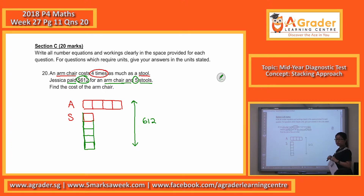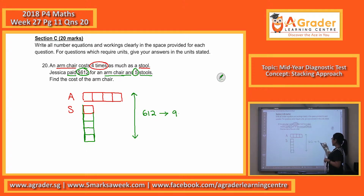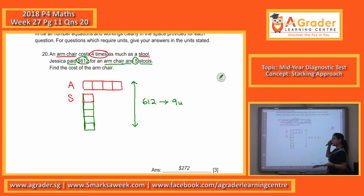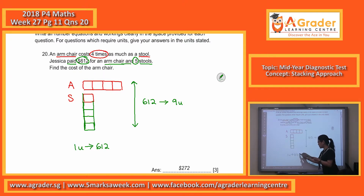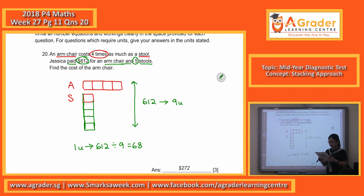How many units here? Nine. So the $612 actually represents nine units. If nine units is $612, now I can look for one unit. $612 divided by nine equals $68.